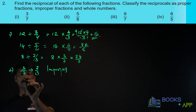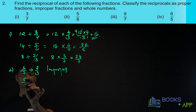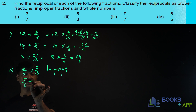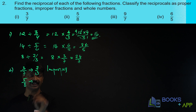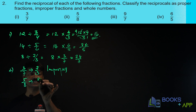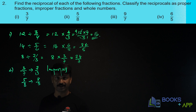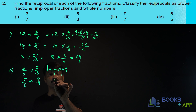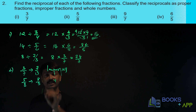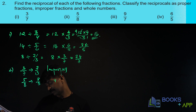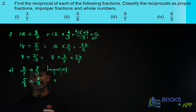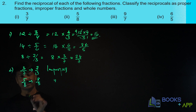The second one is 5 by 8. What is the reciprocal of 5 by 8? It is 8 by 5. Is it proper or improper? It is also improper, because the numerator is greater than the denominator.